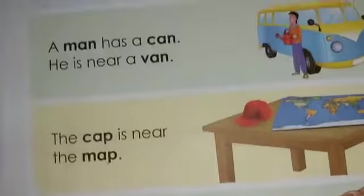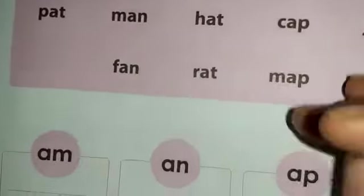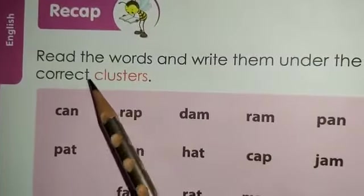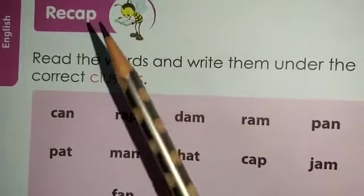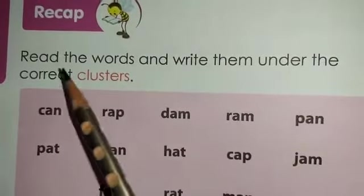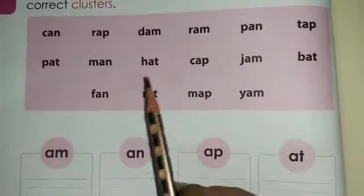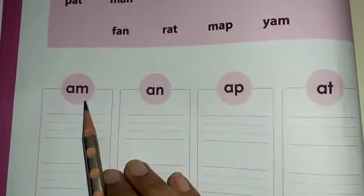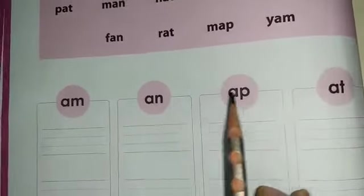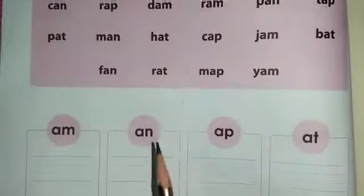Please go through it in the same way as I have taught you, and you will be able to understand and revise things. Now please turn over to the next page, which is page number 28. On page number 28, you have been given an exercise. This exercise is a revision exercise — a recap. Read the words and write them under the correct clusters. You have been given a lot of words and different boxes. Different clusters are mentioned: AM, AN, AP, and AT. We have to find those words and write them in the correct blank.